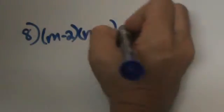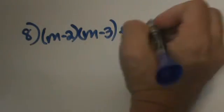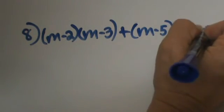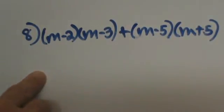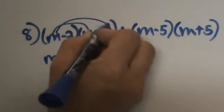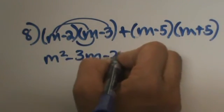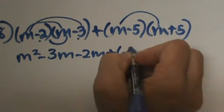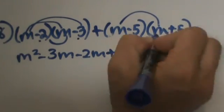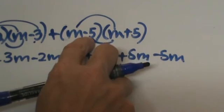Let's do one more fancy problem — number 8. It's a binomial times a binomial: n minus 2 times n minus 3, plus another binomial times a binomial: m minus 5 times m plus 5. Since these are added we don't need to worry as much about signs. We'll FOIL each part separately. For n minus 2 times n minus 3: n squared, outer is negative 3n, inner is negative 2n, and last is positive 6. For m minus 5 times m plus 5: m squared, outer is positive 5m, inner is negative 5m, and last is negative 25.